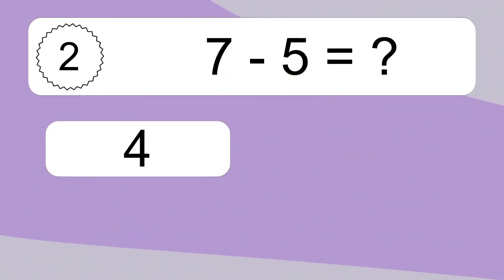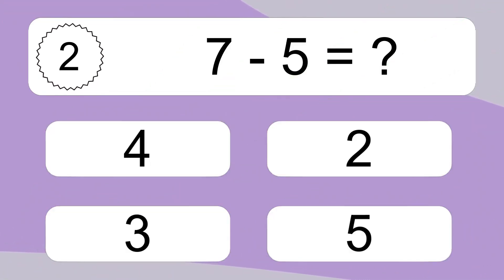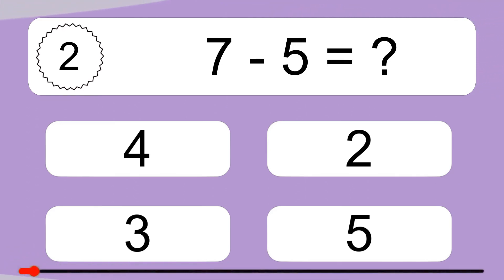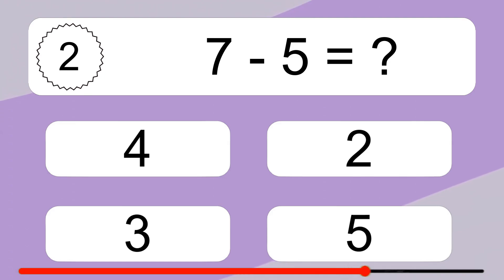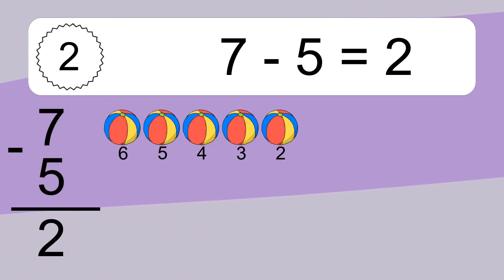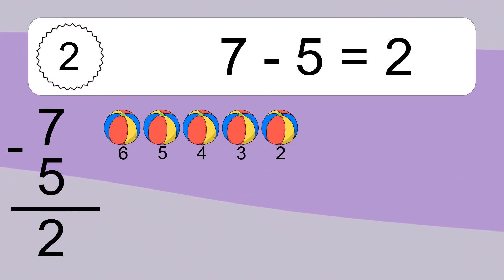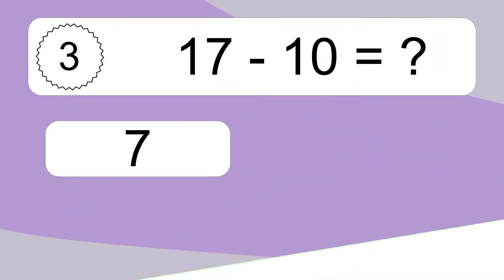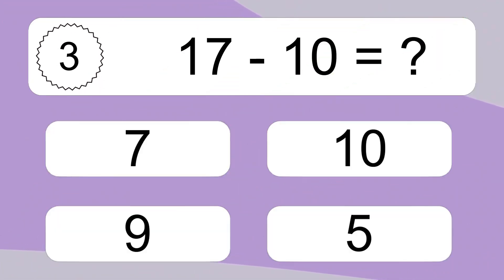7 minus 5 equals what? 7 minus 5 equals 2. Let's count it: 6, 5, 4, 3, 2.